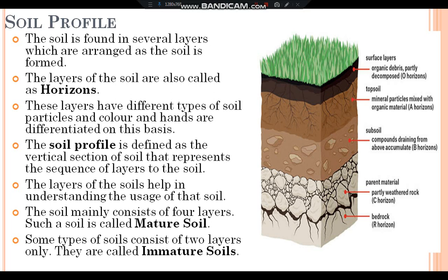Let us discuss about soil profile, which is nothing but the different layers of soil. The soil is found in several layers which are arranged as the soil is formed. The layers of the soil are also called horizons. These layers have different types of soil particles and color, and are differentiated on this basis. The soil profile is defined as the vertical section of the soil that represents the sequence of layers. The layers of the soil help in understanding the usage of that soil.